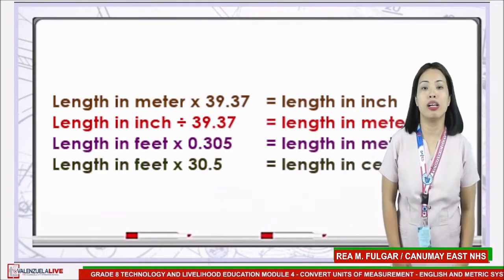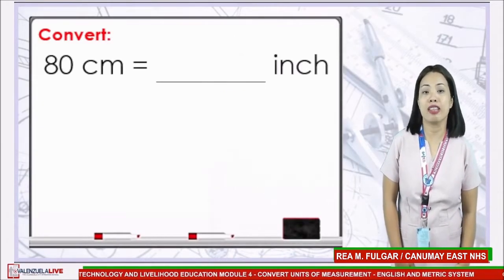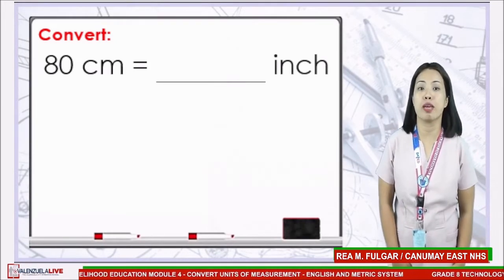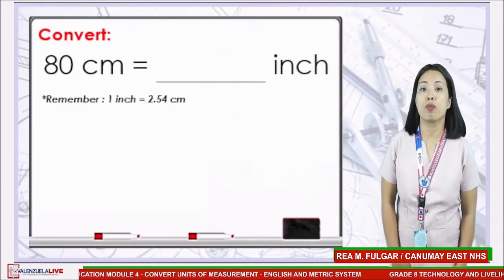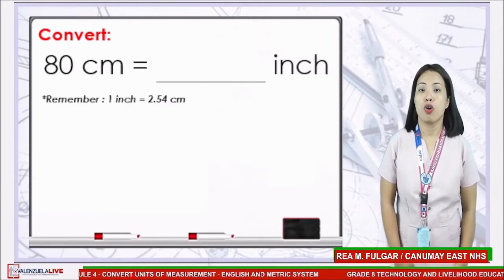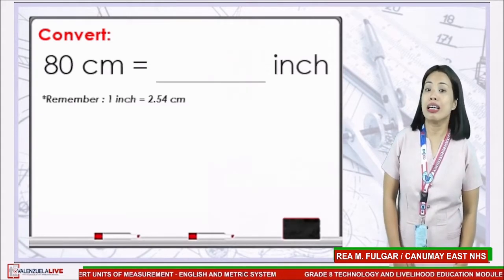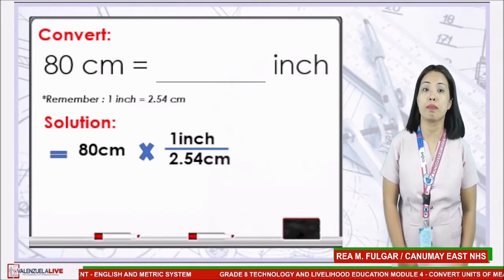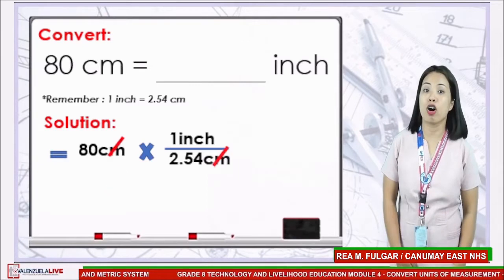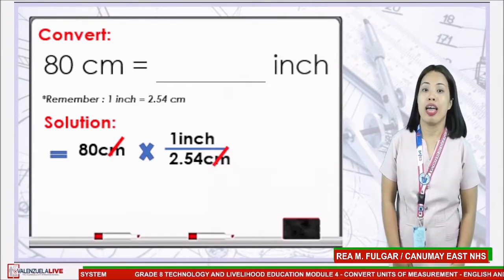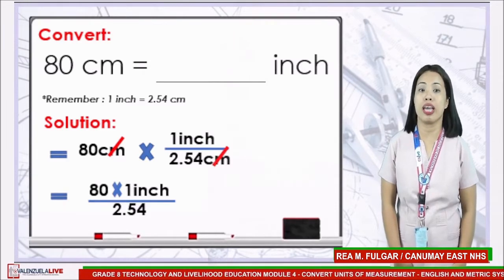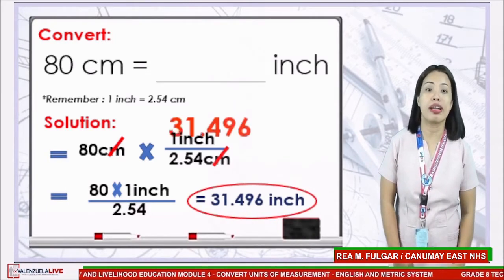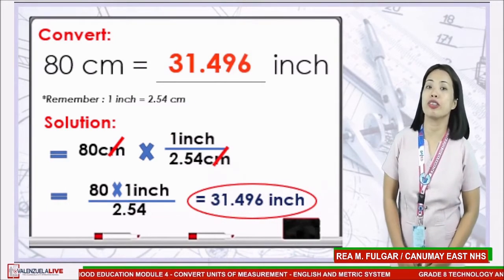Let's have an example. Convert 80 cm to inches. Remember that in the English conversion table, 1 inch is equivalent to 2.54 cm. The given is 80 cm, multiplied by the fraction 1 inch over 2.54 cm. Cancel the common unit, which is cm, and continue multiplying 80 by 1 inch and divide by 2.54. The answer is 31.496 inches.